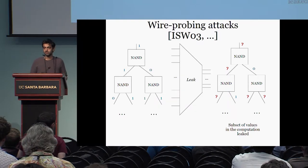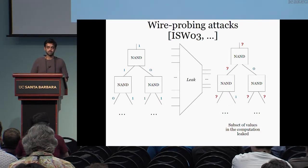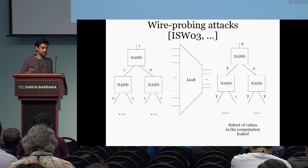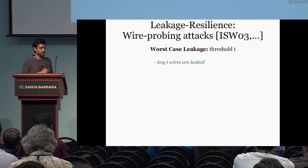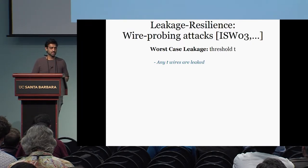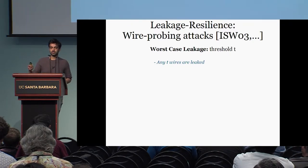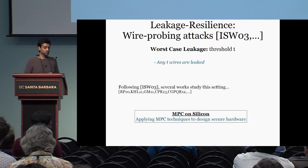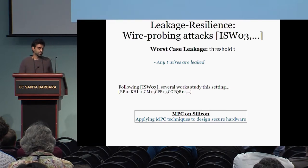In wire probing attacks, the leak is just a projection function — the output of the leak is a subset of wire values in the computation. How is this subset chosen? The answers to these questions lead to different settings. In the worst-case setting, the adversary specifies a threshold T and is allowed to get any T wire values in the computation. There are several works studying this setting following ISW.